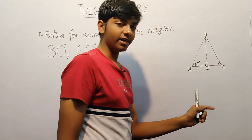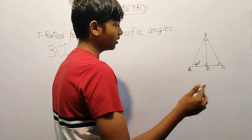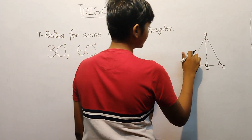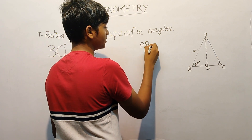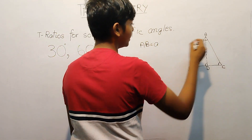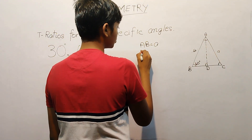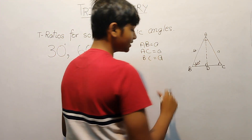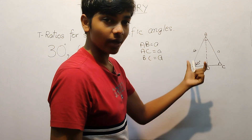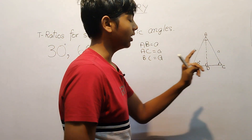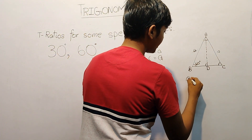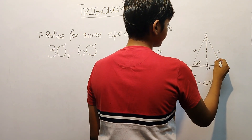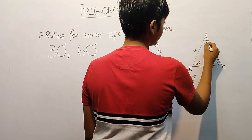First, we'll take an equilateral triangle. What is an equilateral triangle? A triangle with all sides equal. So let AB equal A. If the length of AB is A, then AC would also be A and BC would also be A. And since it is an equilateral triangle, it is also equiangular — meaning all the angles are equal, which gives us 180 degrees divided by 3, equal to 60 degrees. So all these angles are 60 degrees.